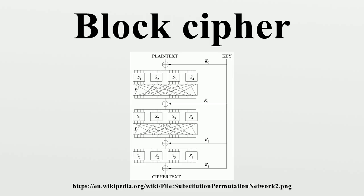Patterns in the plaintext message become evident in the ciphertext output. To overcome this limitation, several block cipher modes of operation have been designed and specified in national recommendations such as NIST 800-38A and BSI TR-02102, and international standards such as ISO/IEC 10116. The general concept is to use randomization of the plaintext data based on an additional input value, frequently called an initialization vector, to create what is termed probabilistic encryption.